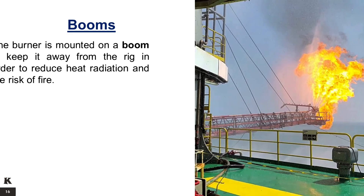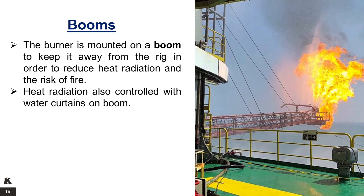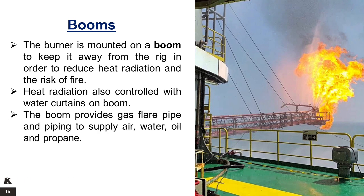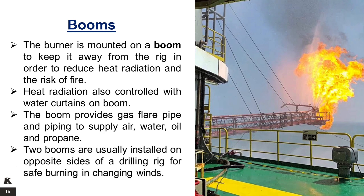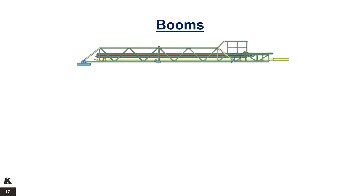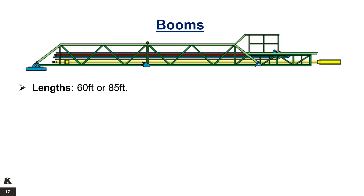Booms. The burner is mounted on a boom to keep it away from the rig in order to reduce heat radiation and the risk of fire. Heat radiation is also controlled with water curtains on the boom. The boom provides gas flare pipe and piping to supply air, water, oil, and propane. Two booms are usually installed on opposite sides of a drilling rig for safe burning in changing winds. Booms exist in 60-feet or 85-feet lengths, with two types of structures available: the U-shaped or the V-shaped.